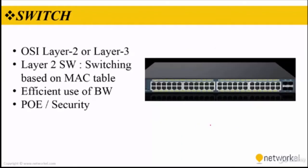The second device we are going to talk about is the Switch. A network switch is a computer networking device that connects devices together on a computer network by using packet switching to receive, process, and forward data to the destination device. A network switch is a multi-point network bridge that uses hardware addresses to process and forward data at the link layer, layer 2 of the OSI model.